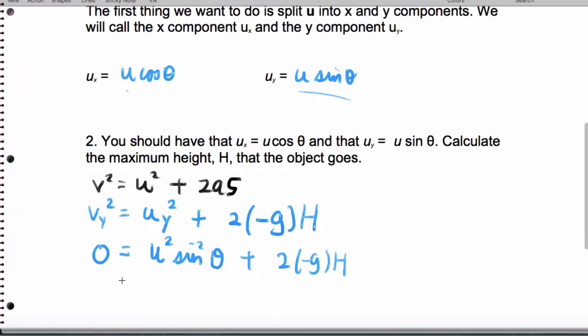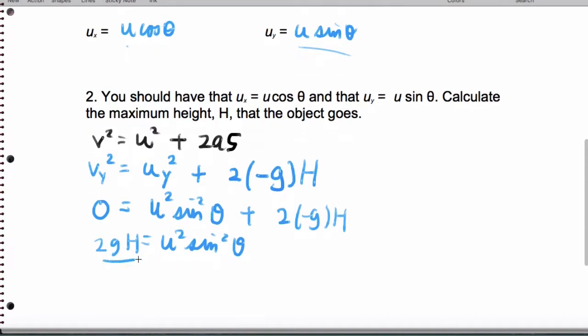Let's do a little bit of algebra here. I'm going to add 2gh to both sides, so I'll get 2gh equals u squared sine squared theta, and then divide both sides by 2g to isolate the h that I'm solving for.